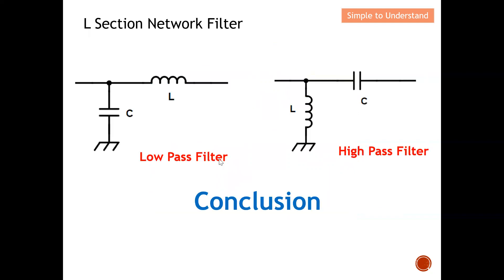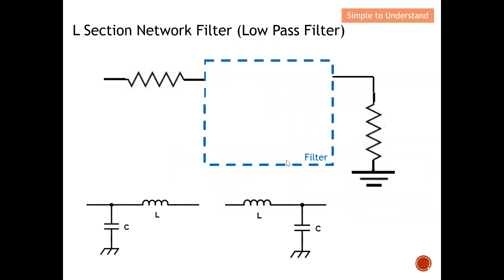Here is a quick conclusion: series L and shunt C is a low pass filter; series C and shunt L is a high pass filter.